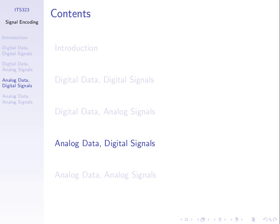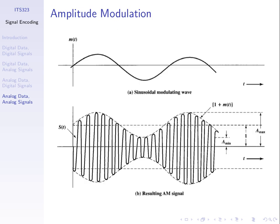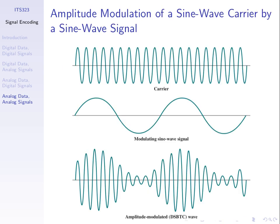We've covered sending digital data as either digital or analog signals. Now, what if we have analog data — some continuously varying data like audio or video, not in binary? If we have analog data and want to send it as an analog signal, we can vary the three parameters of our analog signal: amplitude, frequency, or phase. We take our analog data and use it to modulate a carrier signal.